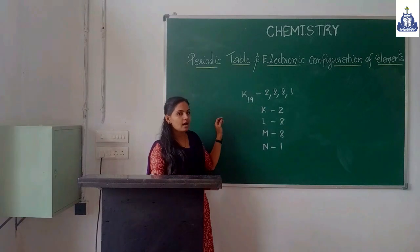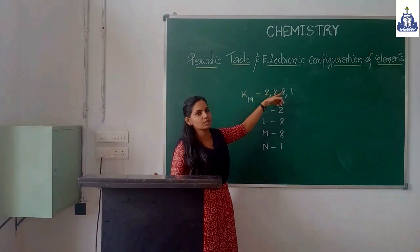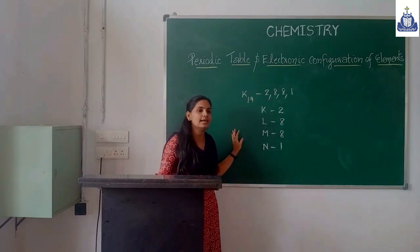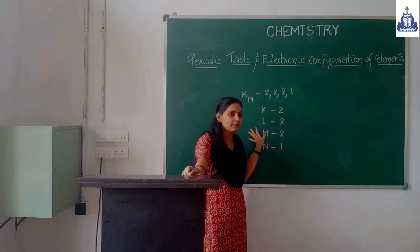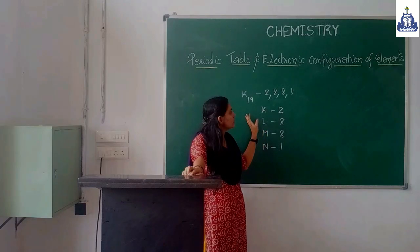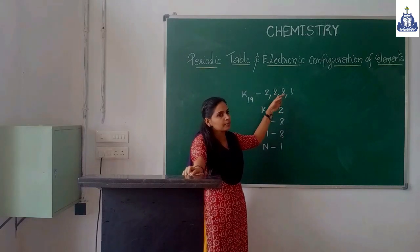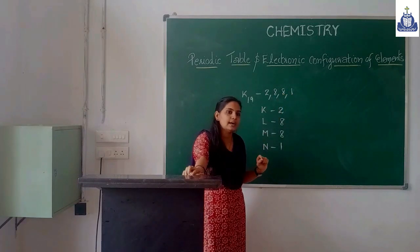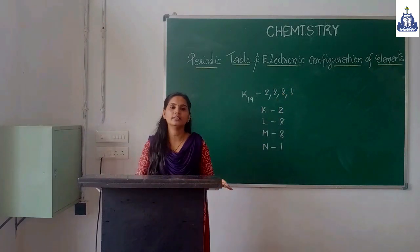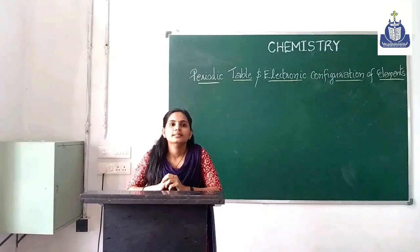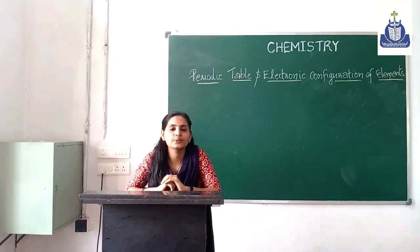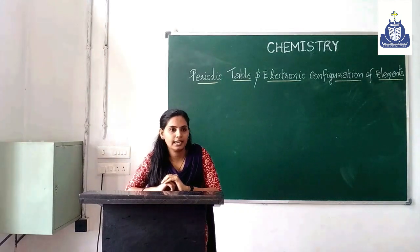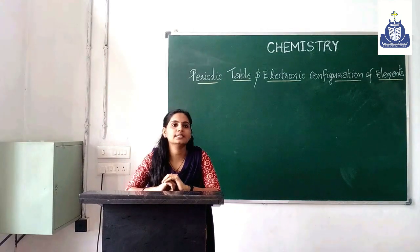Why does the last electron of potassium go to the fourth shell instead of occupying the third shell, even though the third shell has the capacity to accommodate 10 more electrons? The last electron occupies the fourth shell.